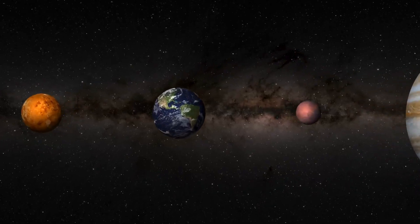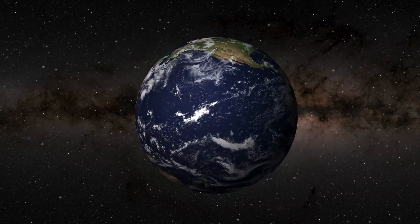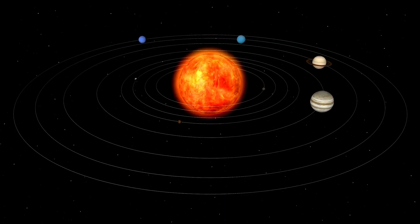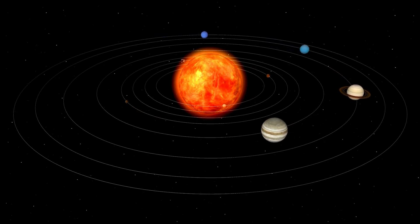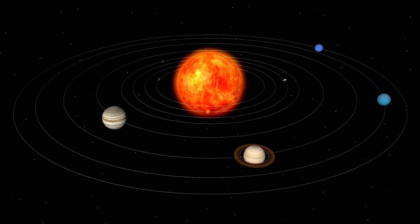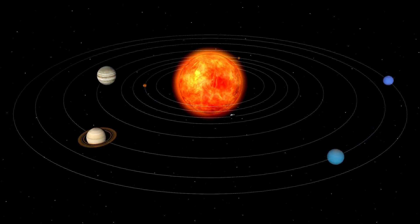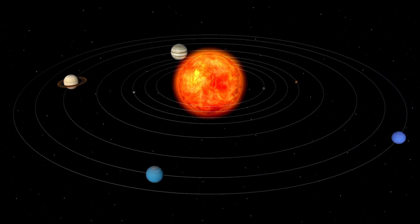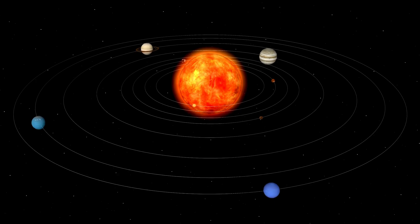Earth is third, our home so blue, with life and ocean skies so true. Mars is red with dusty plains, maybe once it had some rings. Jupiter's huge with storms so wide, a giant ball with moons that fly.